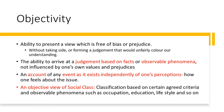Sociologists look at evidence, that is facts or observable phenomena, and they are not, as far as possible, influenced by their own values and prejudices. It is an account of any event as it exists independently of one's perception — in other words, independently of how one feels about the issue. You might hear about an objective view of social class, that is classification based on certain agreed criteria and observable phenomena such as occupation, education, lifestyle and so on. So when you talk about objectivity, remember: it is presenting a view which is free from bias or prejudice and based on observable phenomena.